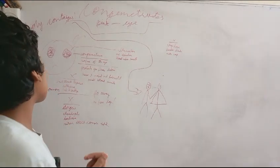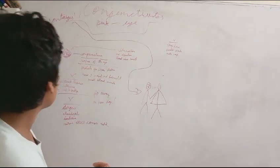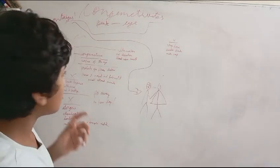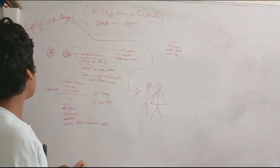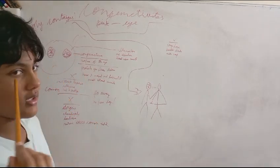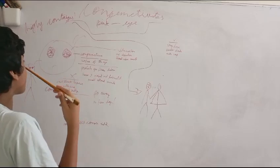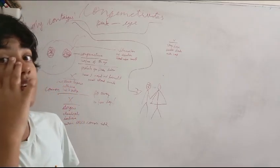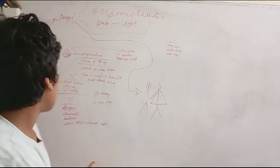But what actually happens? So first we have to go to the conjunctiva. And basically what it is, is the surface of the eye, the very first layer over here that you see.